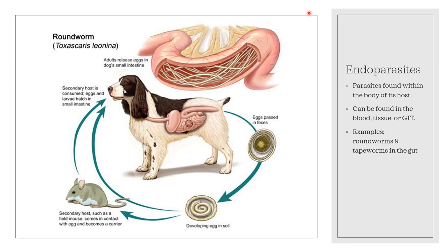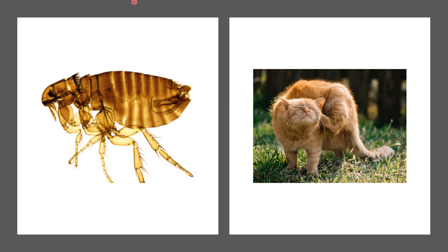An ectoparasite will produce an infestation on the host, and an endoparasite will produce an infection within that host. According to the Pediatric Infectious Disease Journal, to infest conveys the idea of external attack upon something, very appropriate for ectoparasites, while infection conveys the idea of internal parasitism with penetration. Cat fleas, Ctenocephalides felis, living within a dog or cat hair coat are ectoparasites and produce ectoparasitism — they produce infestation in the host hair coat.